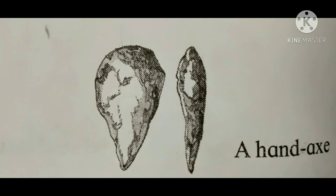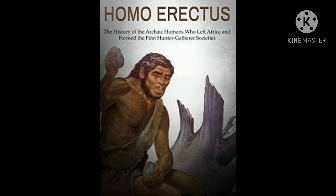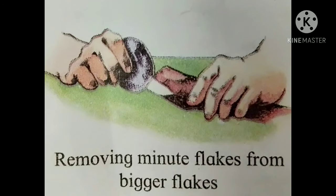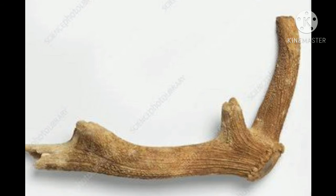Tools like the hand axe and cleaver made by Homo erectus are more proportionate and symmetrical than the choppers made by Homo habilis. A proportionate and symmetrical tool has to be mentally visualized first — only then is it possible to make it. Homo erectus could mentally visualize his tools even before he actually shaped them.